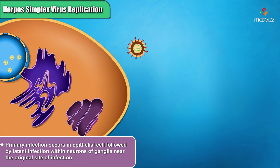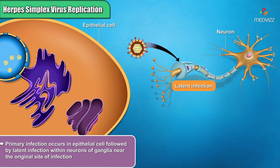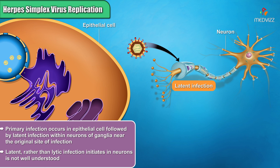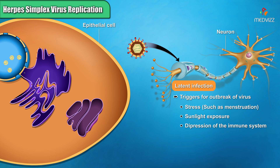The primary infection occurs in epithelial cells, followed by latent infection within neurons of ganglia near the original site of infection. How a latent, rather than lytic, infection initiates in neurons is not well understood. The latent infection of the ganglia later leads to new outbreaks of virus, often triggered by stress, sunlight exposure, or depression of the immune system. Progeny virions travel back to the epithelia, causing lytic infection.